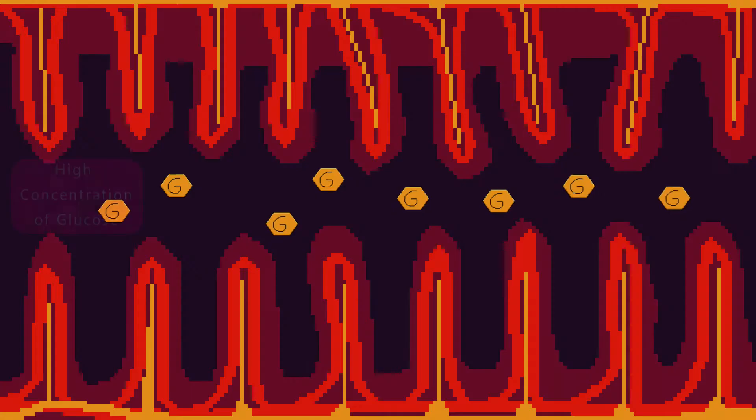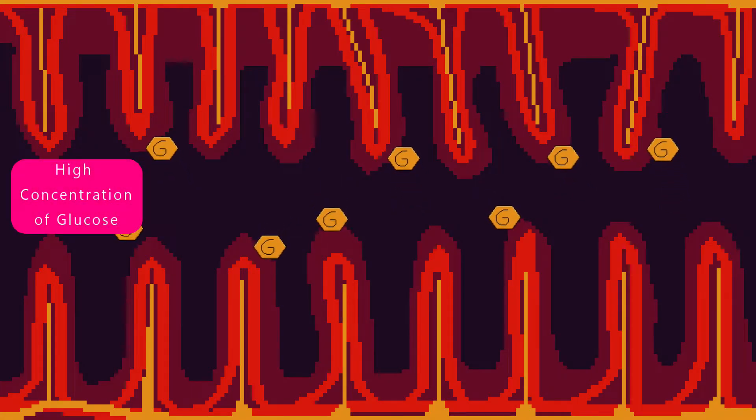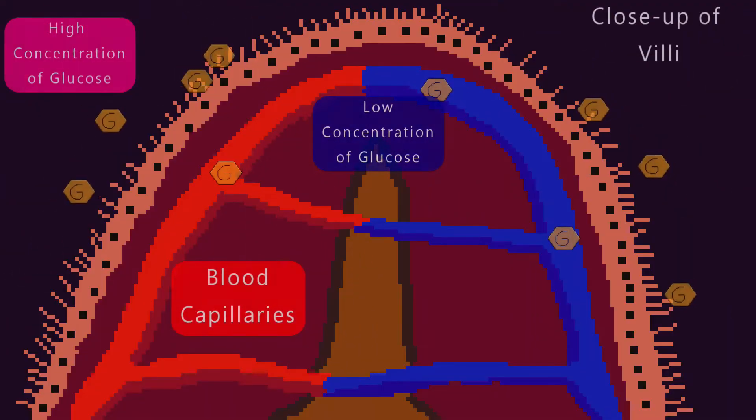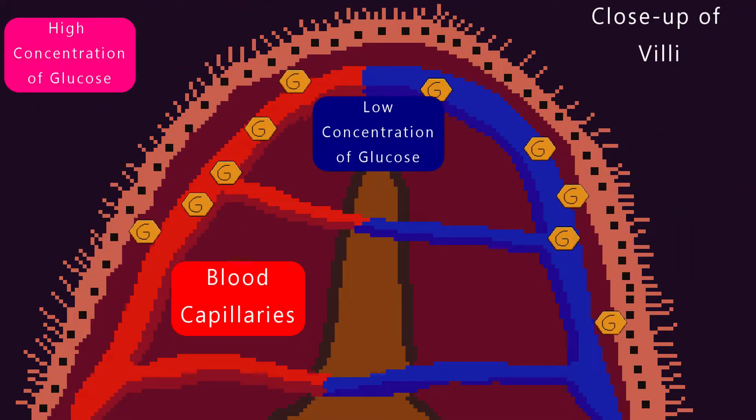Take glucose for example. The glucose is diffusing from a region of high concentration, the inside of the small intestine, to a region of low concentration, the blood.